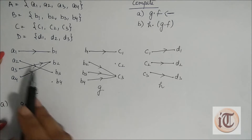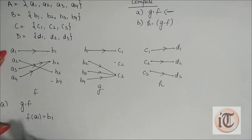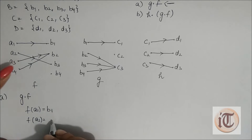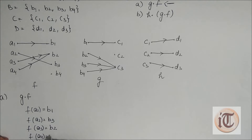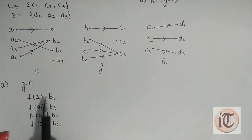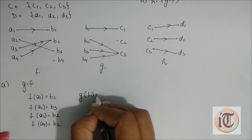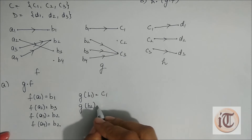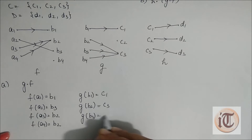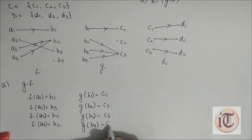From the mapping: f(a1) = b1, f(a2) = b3, f(a3) = b2, and f(a4) = b2. For g: g(b1) = c1, g(b2) = c3, g(b3) = c3, and g(b4) = c3.